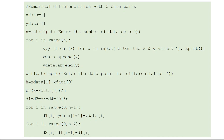Just like the interpolation program, we are going to write a specific program for five data pairs, as given in the guidebook. These programs have limited scope — you can only use this for exactly five data pairs, not four or six. If you are interested, you can write a general program where the user inputs the number of data pairs, making it more flexible. That would be the best approach, and you can do it as an extra assignment.